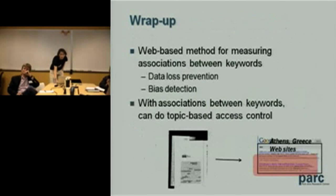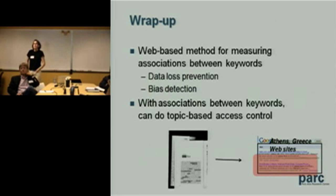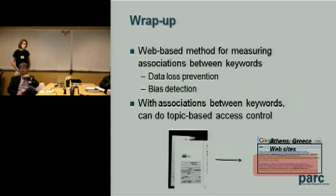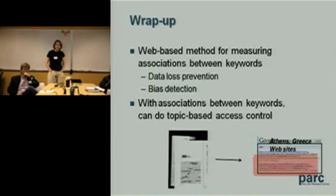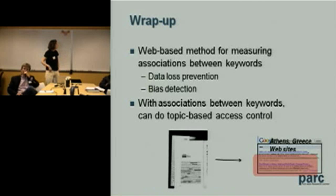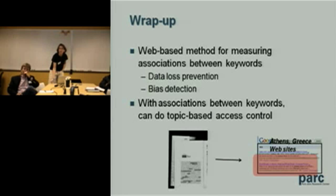To wrap up: we've talked about how to use the web or another large corpus to find associations between keywords and between keywords and sensitive topics, talked about how that might be used for bias detection, and how it might support access control. I'll stop there, but let me know if you have questions, or if anybody wanted to see a concrete example of that encryption protocol.